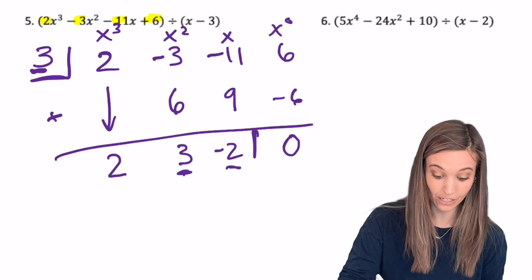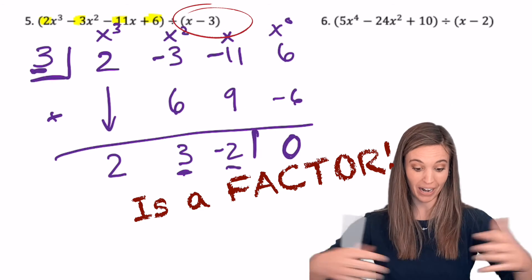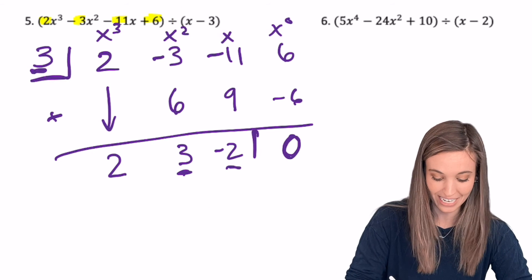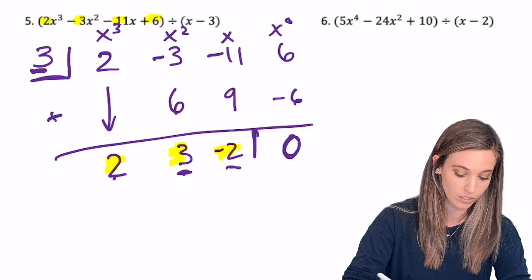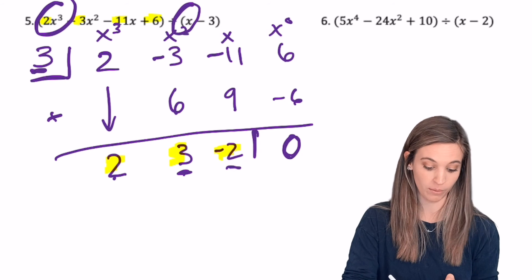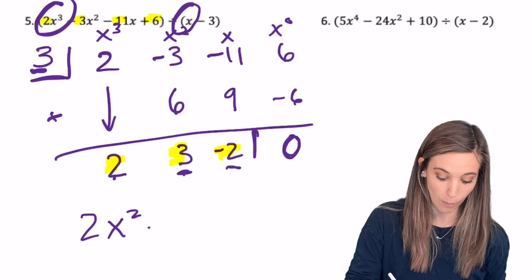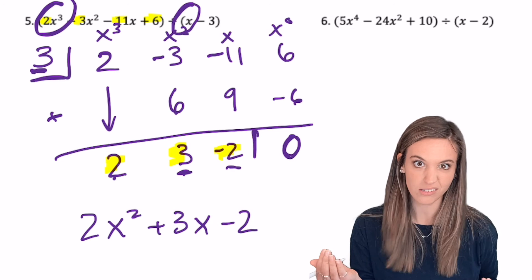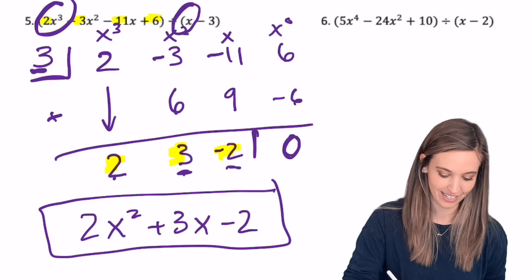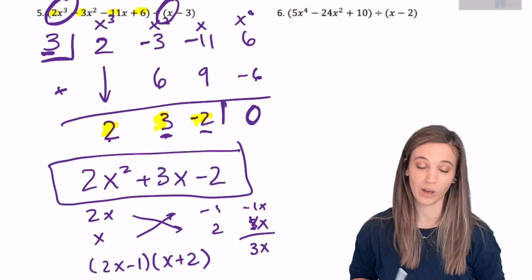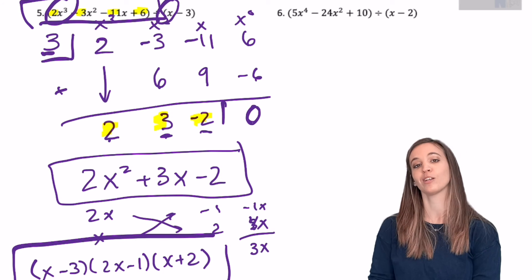I've completed my synthetic division. That 0 is in the remainder spot — so what does it mean if I have a remainder of 0? It means that x minus 3 is a factor of this polynomial. I take these values — 2, 3, and negative 2 — and those are my coefficients for my quotient. Since 2x cubed was being divided by x, the leading term is x squared. So I have 2x squared, then plus 3x, then minus 2. Does this factor out any further? I think it does. Using crisscross, that trinomial factors into 2x minus 1 times x plus 2, and the original factor was x minus 3. So this big polynomial factors into x minus 3, times 2x minus 1, times x plus 2.